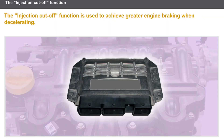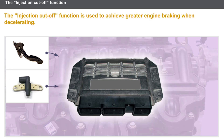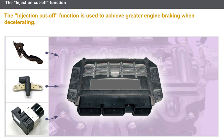The injection cut-off function is used to achieve greater engine braking when decelerating. This function uses the following components: the no-load signal from the accelerator pedal position sensor, the engine speed, and the vehicle speed signal from the ABS computer.